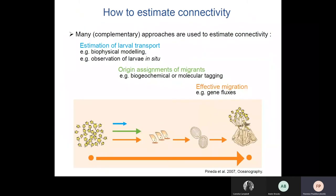There are different approaches to estimate connectivity; each provides information at different levels and has its own limitations. Ideally they would be combined to integrate the complexity of the processes driving connectivity. Estimation of larval transport can be done through direct in situ observations, but this is quite challenging in the deep sea, and more and more often modeling approaches are used to simulate larval trajectories. Origin assignment methods using biogeochemical tags or genetic parentage analysis may provide information on the whole dispersal process from initial release to arrival in a new population.